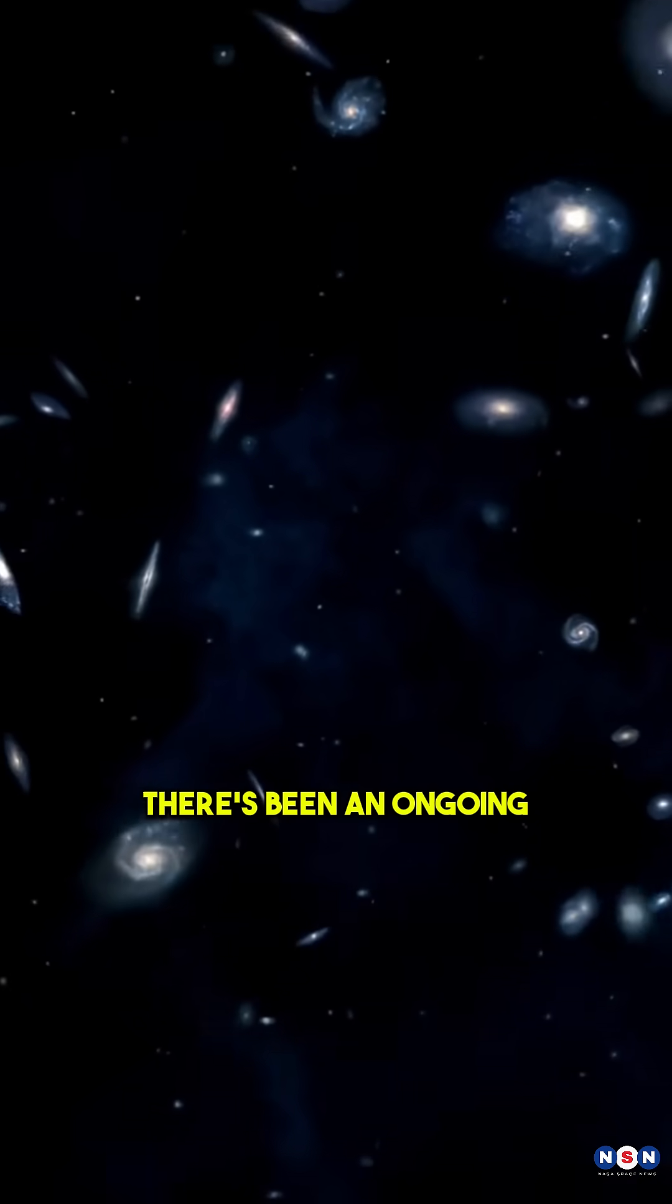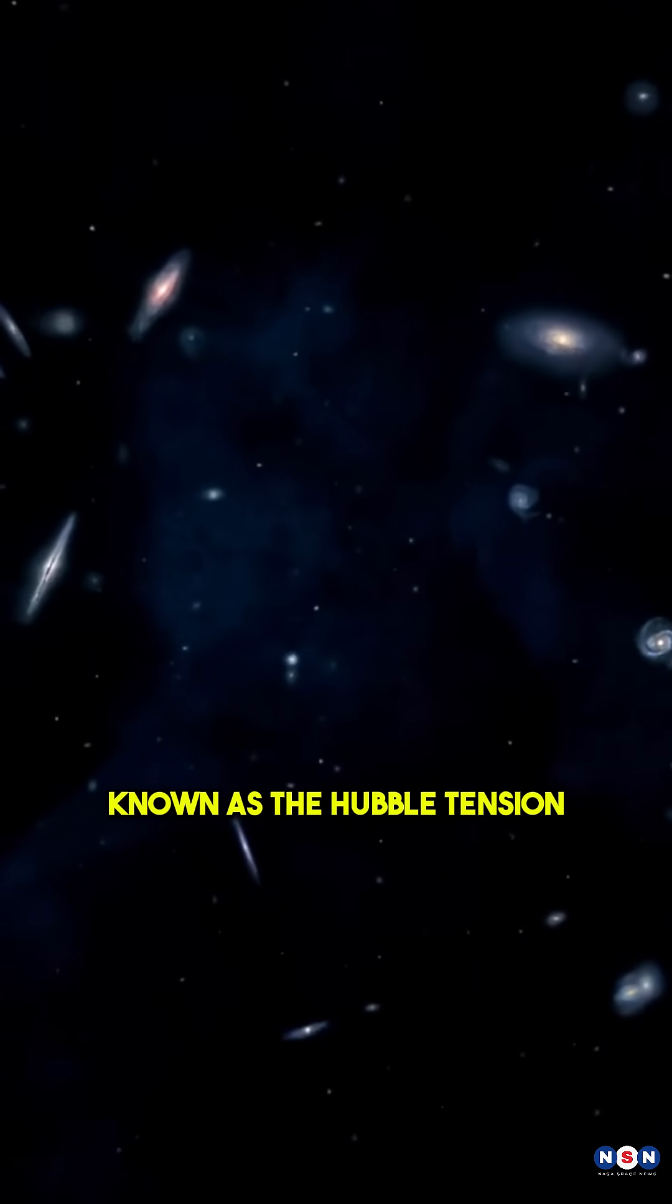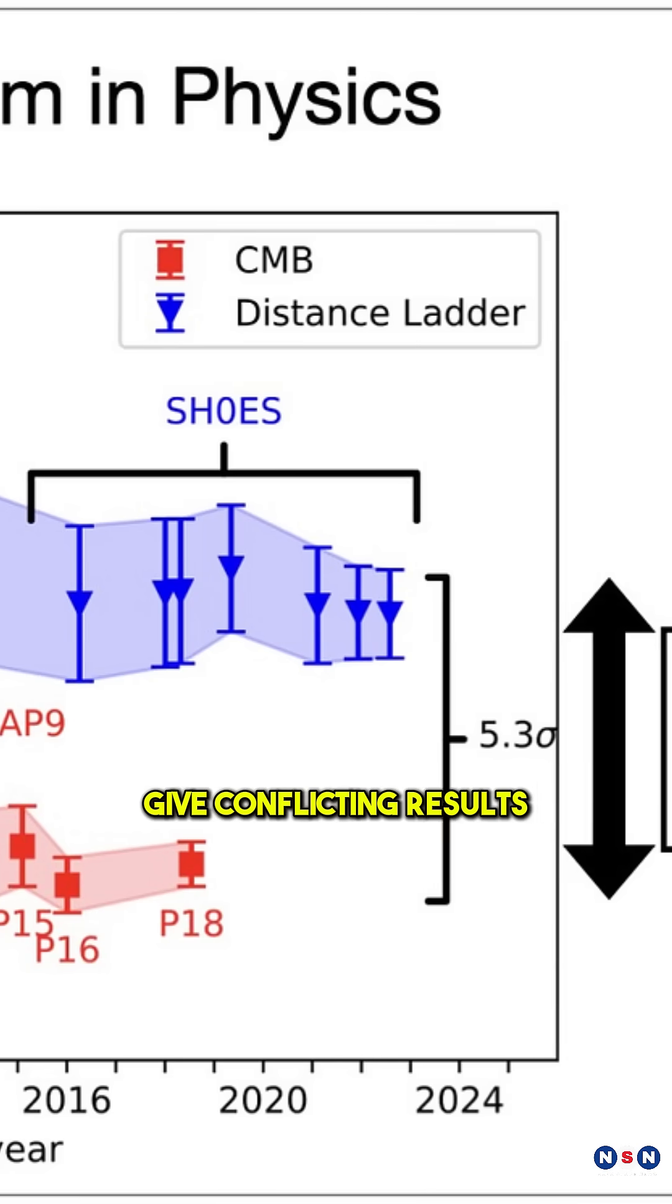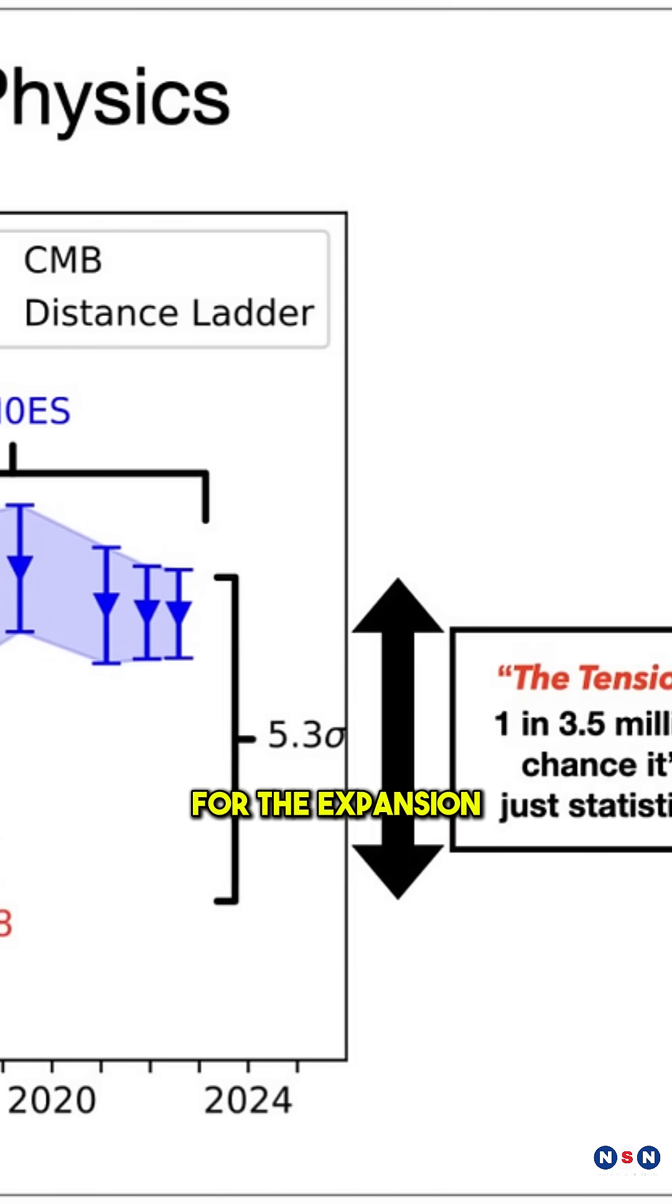Why is this important? There's been an ongoing debate in cosmology known as the Hubble Tension. Different methods give conflicting results for the expansion rate of the universe.